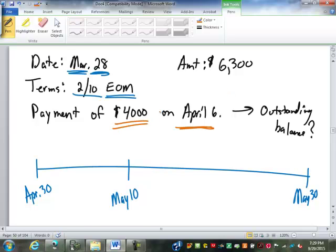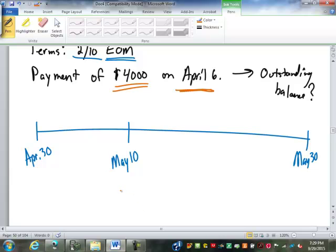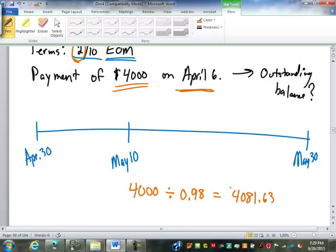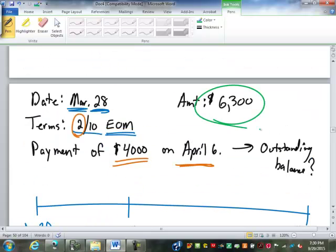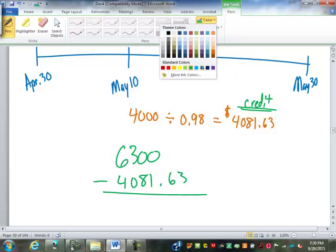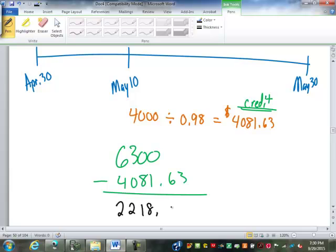So how much are they going to get credited for their $4,000 payment? How do we figure it out? So $4,000 divided by $0.98. 2% discount means 98% is paid divided by $0.98. So that's going to be $4,081.63. That is the credit. So from our $6,300 we're going to subtract that, which is going to give us $2,218.37 as the balance due or outstanding balance by May 30th.